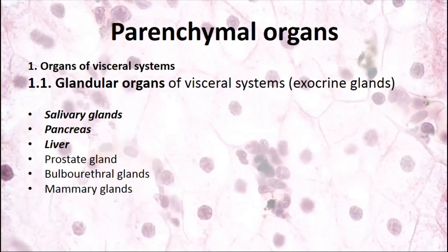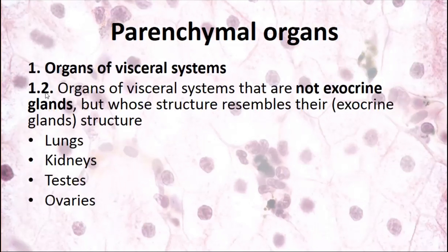Let's make a classification of parenchymal organs. There are four groups. The first group is glandular organs of visceral systems or exocrine glands: salivary glands, pancreas, liver, prostate gland, bulbourethral glands of the male reproductive system, and mammary glands of the female reproductive system. The second group is organs of visceral systems that are not exocrine glands but resemble their structure — they are alike exocrine glands but aren't them: lungs, kidneys, testes, and ovaries.